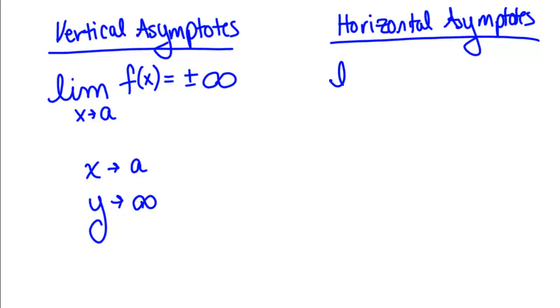With a horizontal asymptote, you're letting X go to plus or minus infinity, and as a result, Y is going towards a number. So here, X goes to plus or minus infinity, and Y goes to a number.